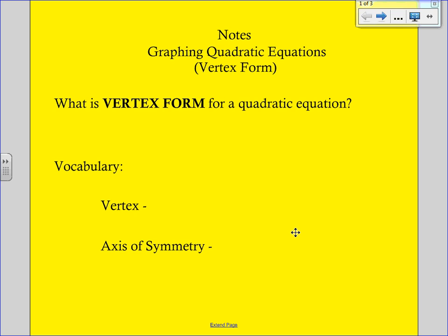The first thing I want you to write down is the actual vertex form, which is y equals a times (x minus h) squared plus k. Those letters probably all look a little bit strange, except you should recognize that there is an x squared and there is a y, so it does have some similarities.